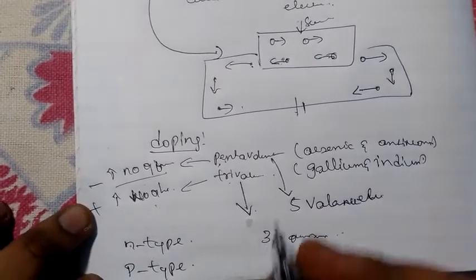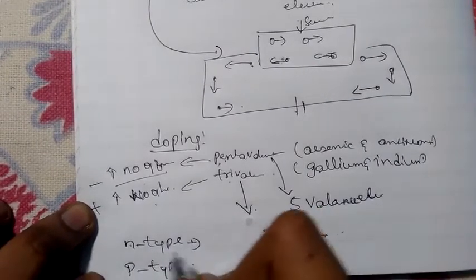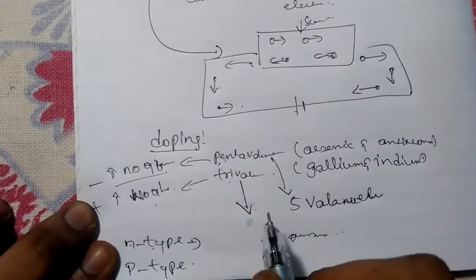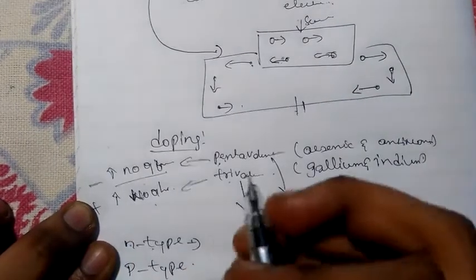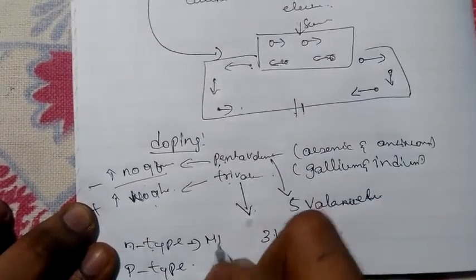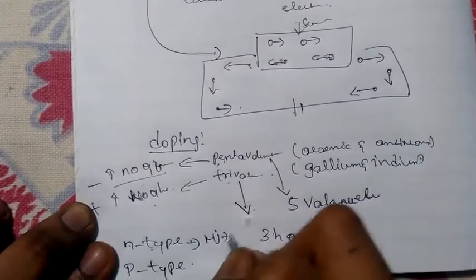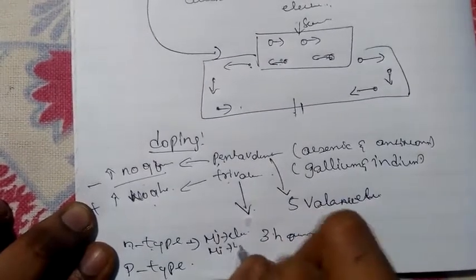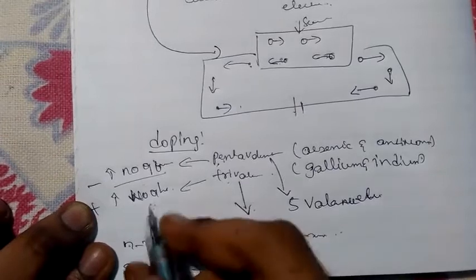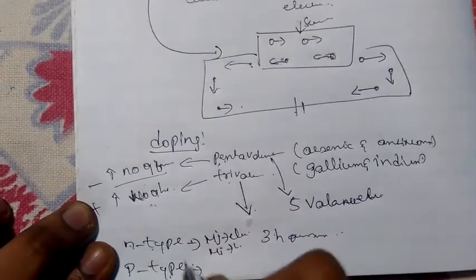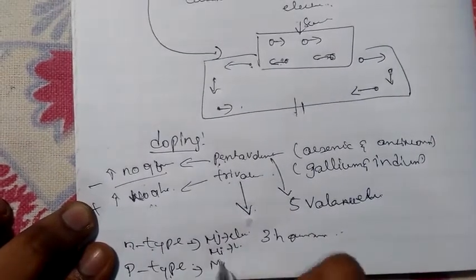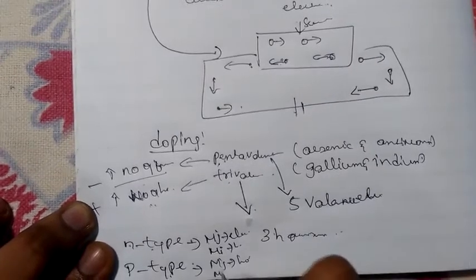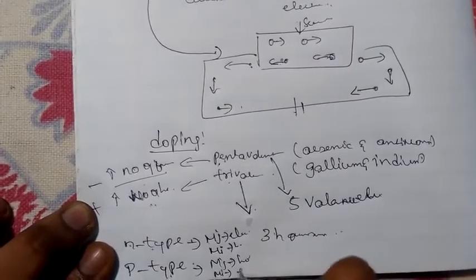In N-type semiconductor, there are a greater number of electrons than holes, so majority carriers are electrons and minority carriers are holes. In P-type semiconductor, holes are more than electrons, so majority carriers are holes and minority carriers are electrons.